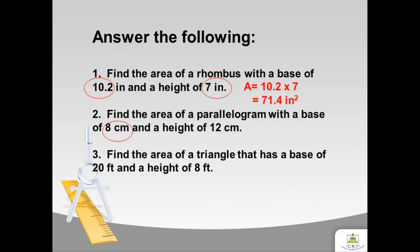Now let's proceed to question number two. Find the area of a parallelogram with a base of 8 cm and a height of 12 cm. To find the area, you have to multiply the base and the height. The given base is 8 cm and the height is 12 cm. After multiplying, you get 96 squared cm.